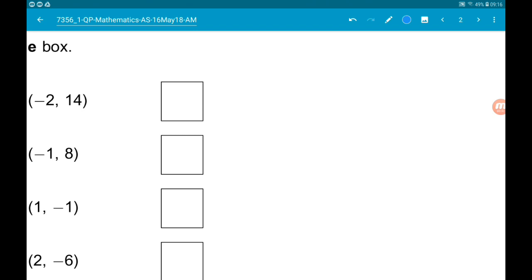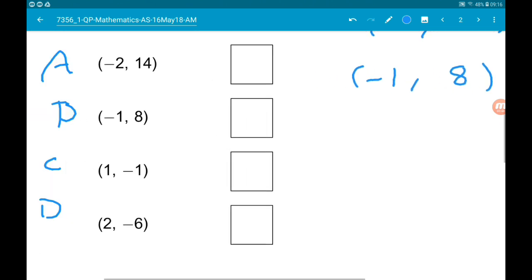We got minus 2, 14, and minus 1, 8. Okay, we can see that the other two points have larger x coordinates than these two points. So we would be working towards the right.